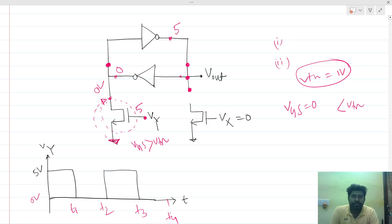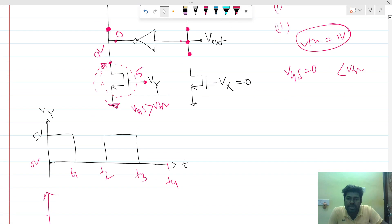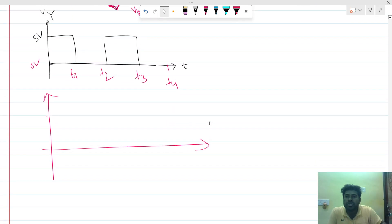Let me draw the waveform. At t equals 0 to t1, the Vout is logic one, which is 5 volts.